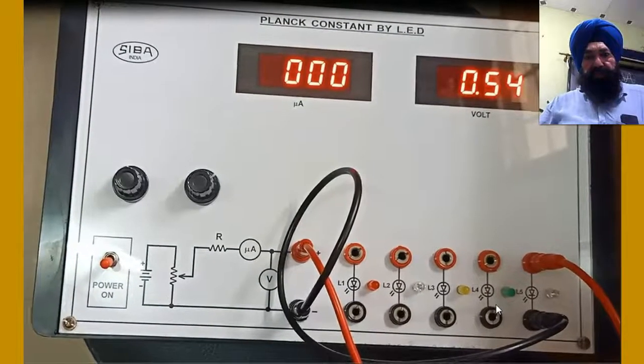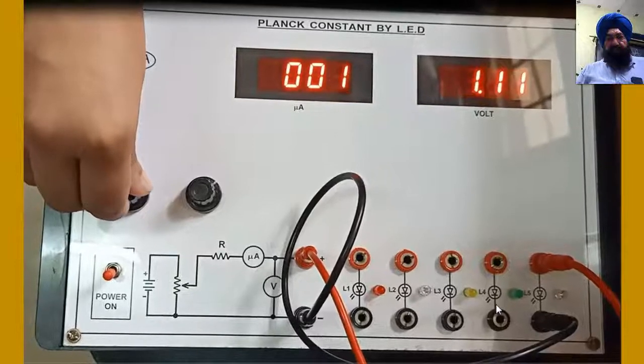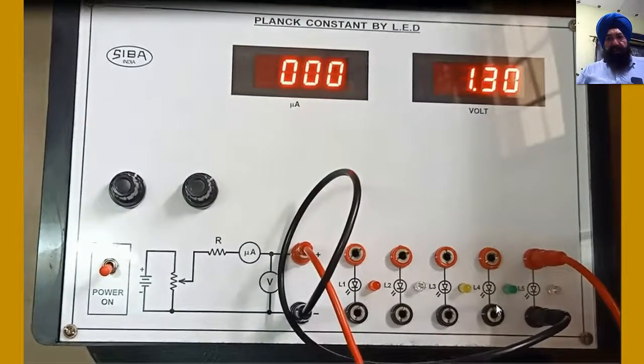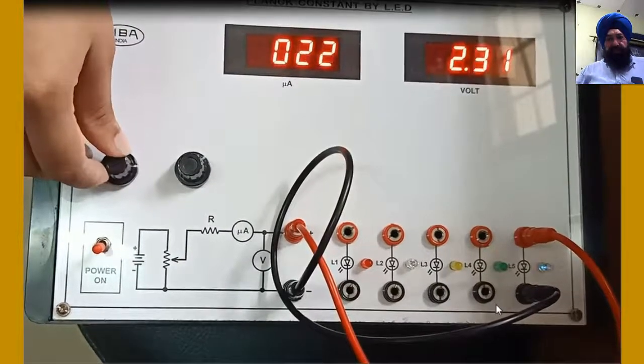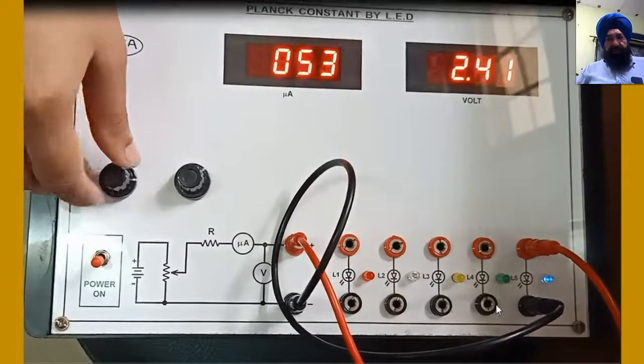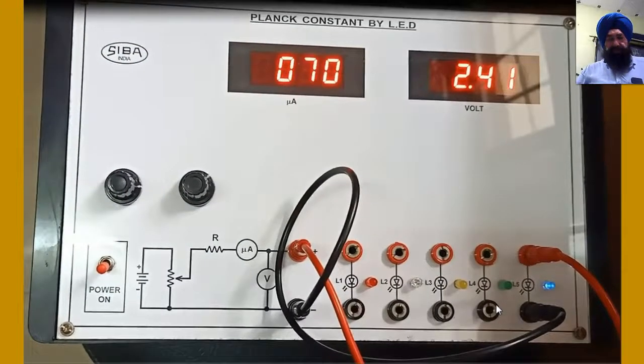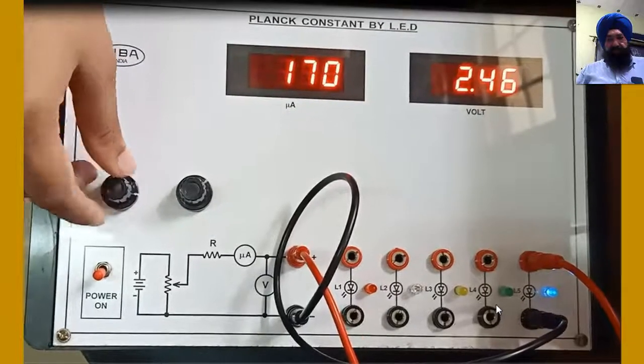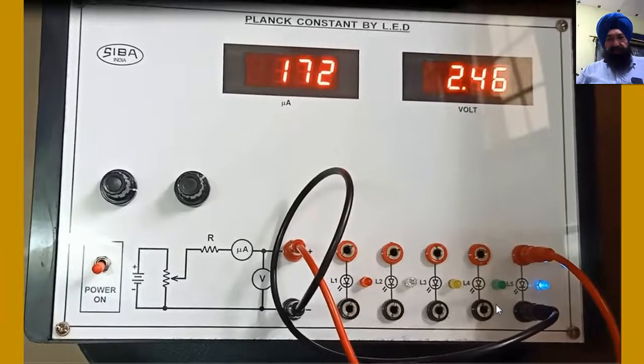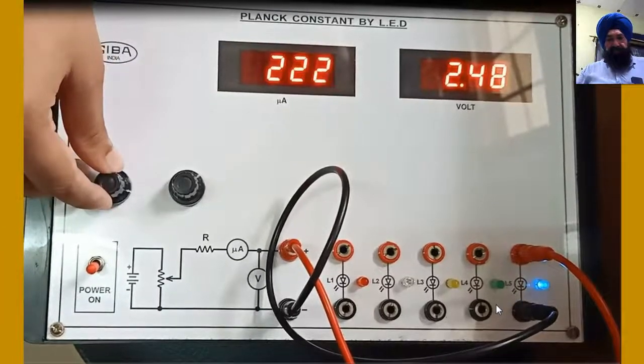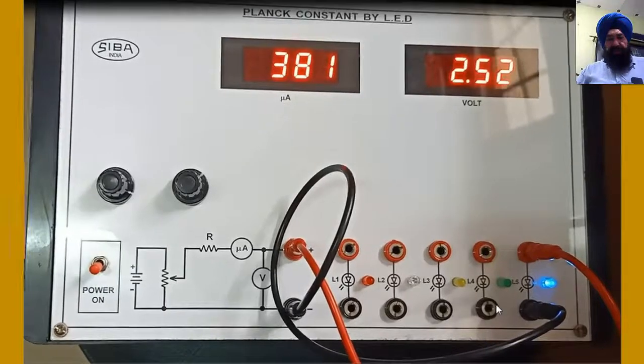Now we are going to experiment with blue color. Voltage 1.29, current 0. Voltage 2.41, current 69 microampere. Voltage 2.47, current 172 microampere.